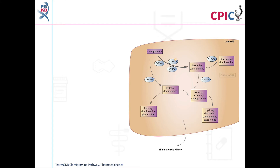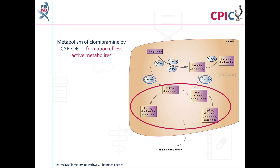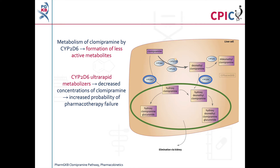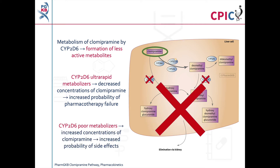Clomipramine is metabolised by CYP2D6 to form less active metabolites. In CYP2D6 ultra-rapid metabolisers, metabolism of clomipramine is increased, which reduces the concentrations of clomipramine in the body and increases the probability of pharmacotherapy failure. In CYP2D6 poor metabolisers, the metabolism of clomipramine is reduced, which increases the concentrations of clomipramine in the body and increases the probability of side effects.